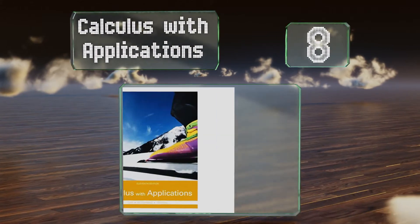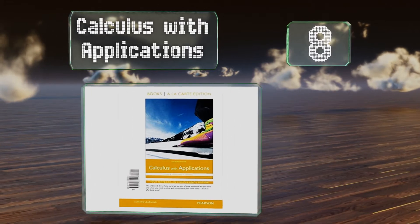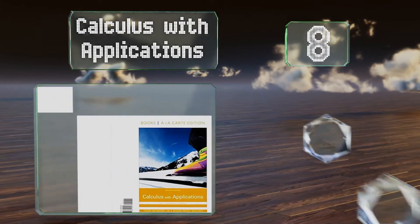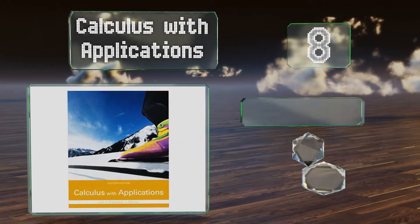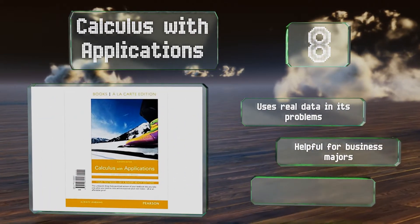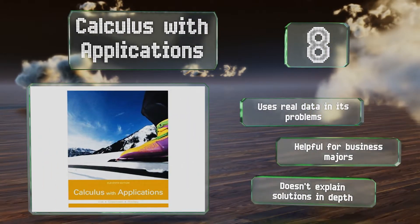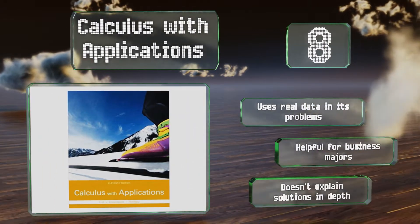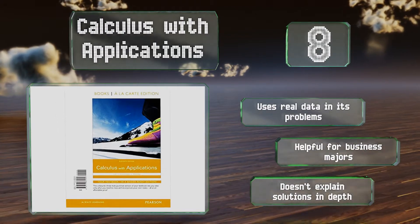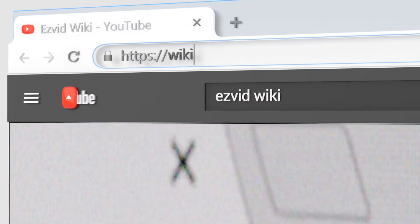Coming in at number eight in our list, Calculus with Applications is written with non-math types in mind as it takes examples and applies them to other fields such as medicine and social science. It'll also bring you up to speed on the algebra you'll need, so don't worry if you're a little rusty going in. It uses real data in its problems and is helpful for business majors. However, it doesn't explain solutions in depth.